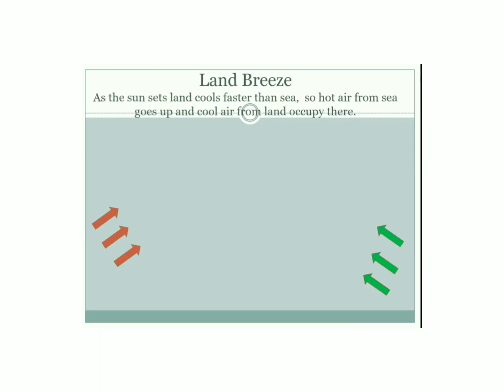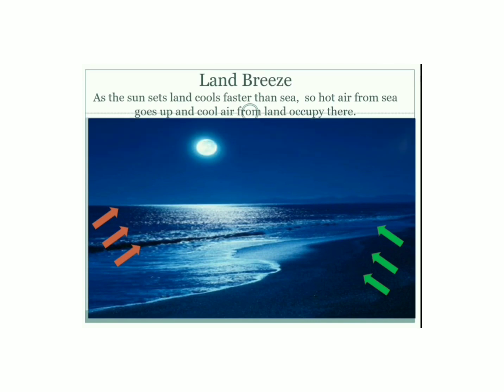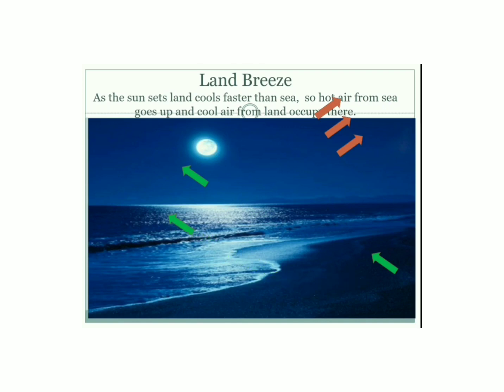Land breeze is just the reverse of sea breeze. As the sun sets, the land cools faster than the sea, and the air above the sea, being warmer, rises up and is replaced by cool air from the land, giving rise to land breeze. The movements caused by hot and cold winds are known as convection currents. Land breeze blows at night.